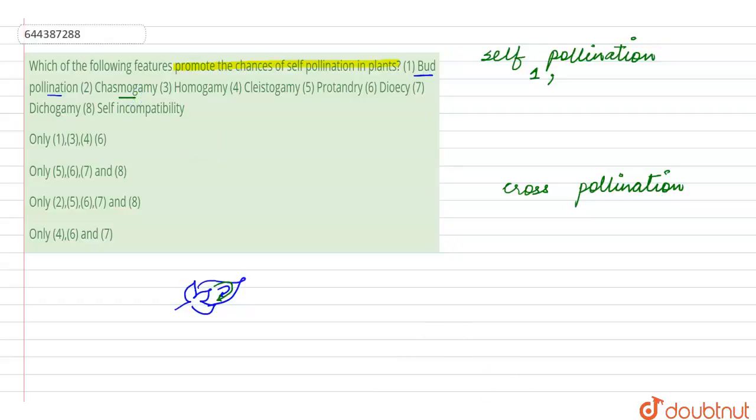Second is chasmogamous. Chasmogamous are open bisexual flowers. So the open bisexual flowers are the ones which will favor the cross-pollination rather than the self-pollination, unless other conditions for self-pollination are not present such as incompatibility.